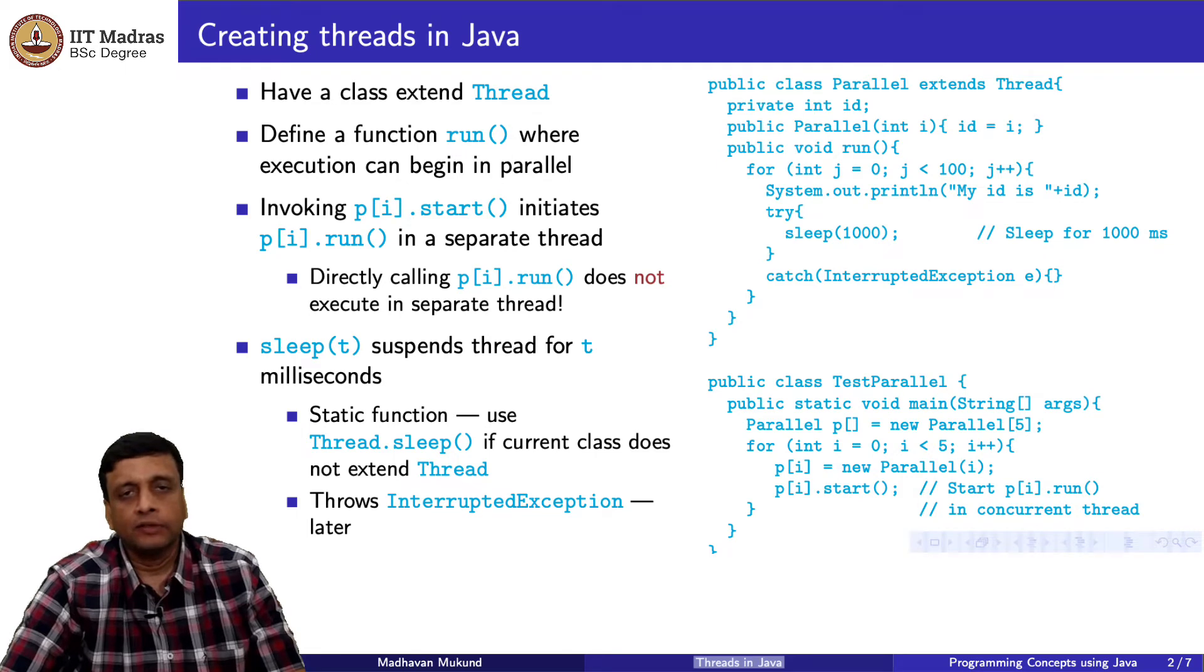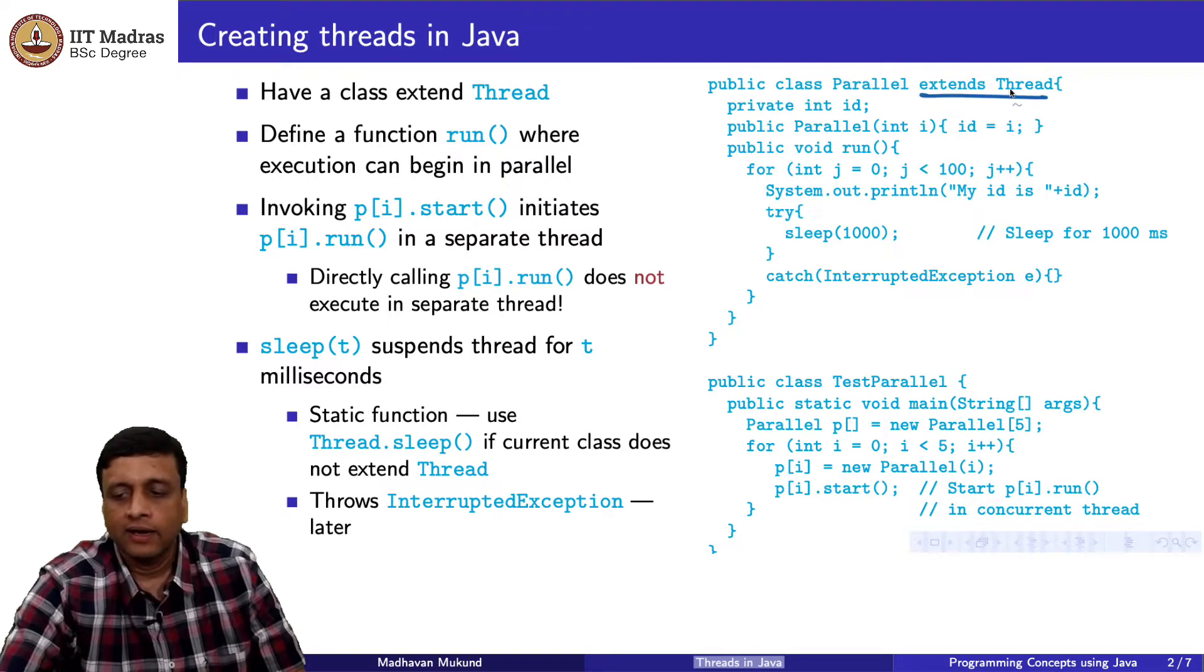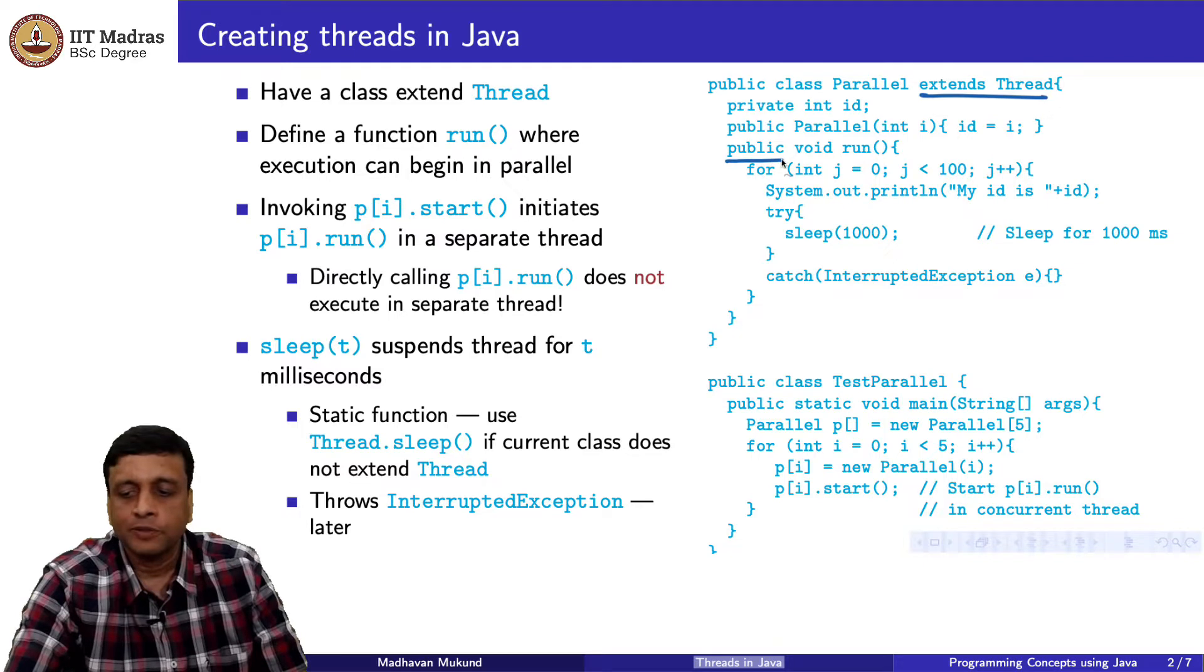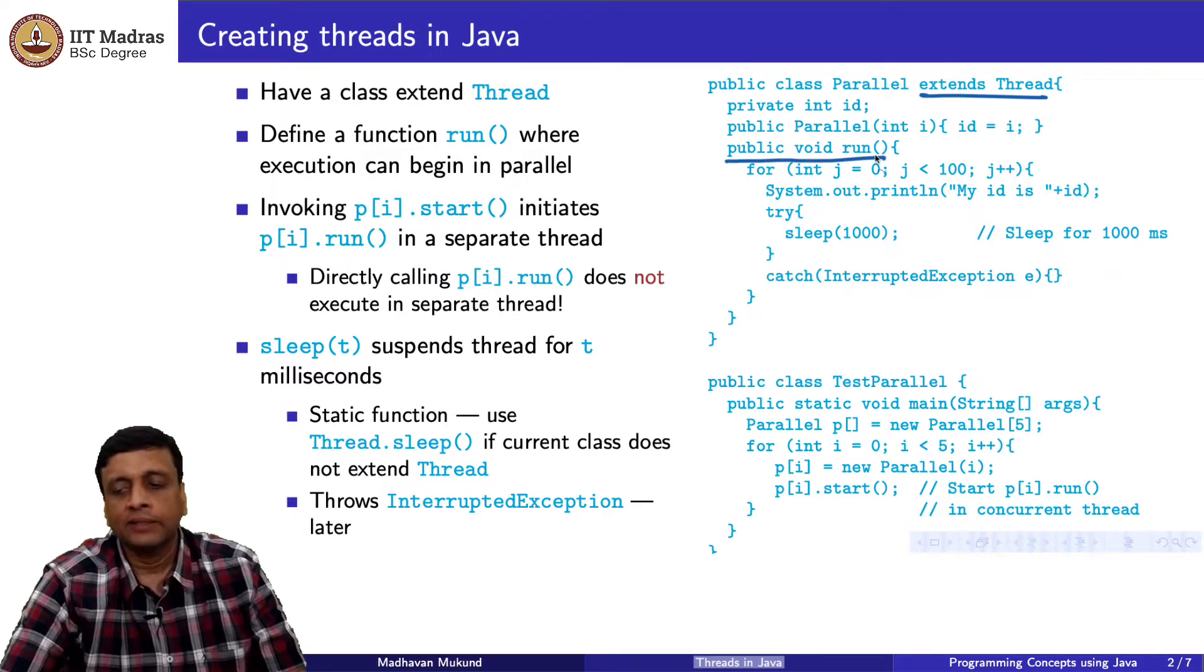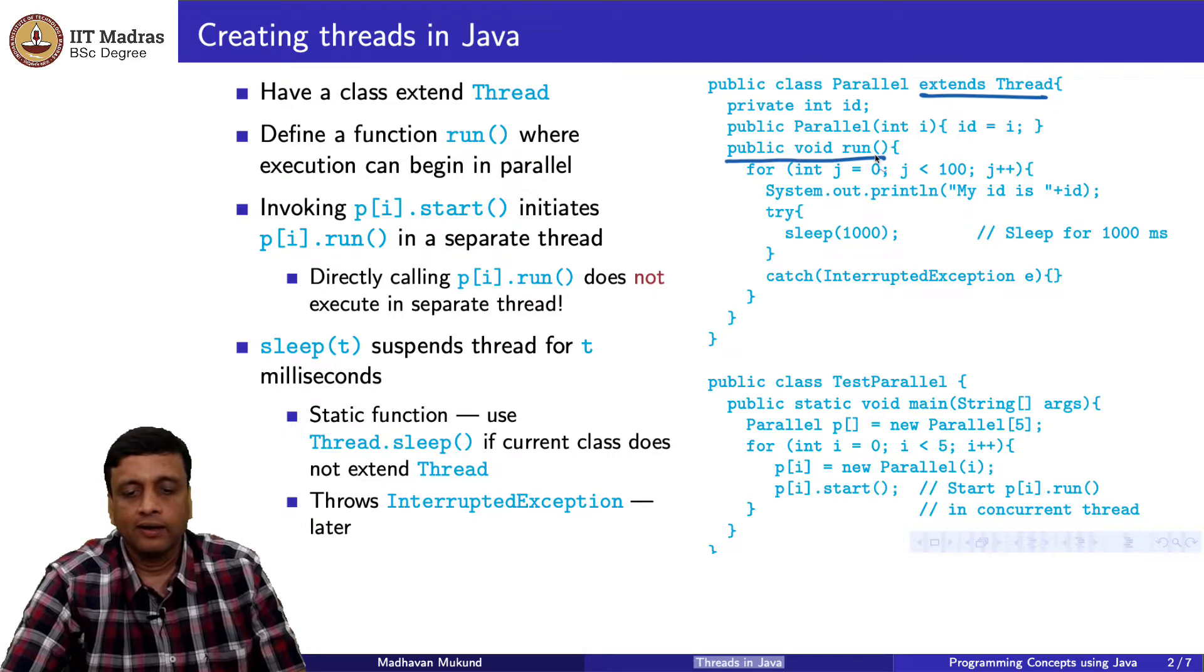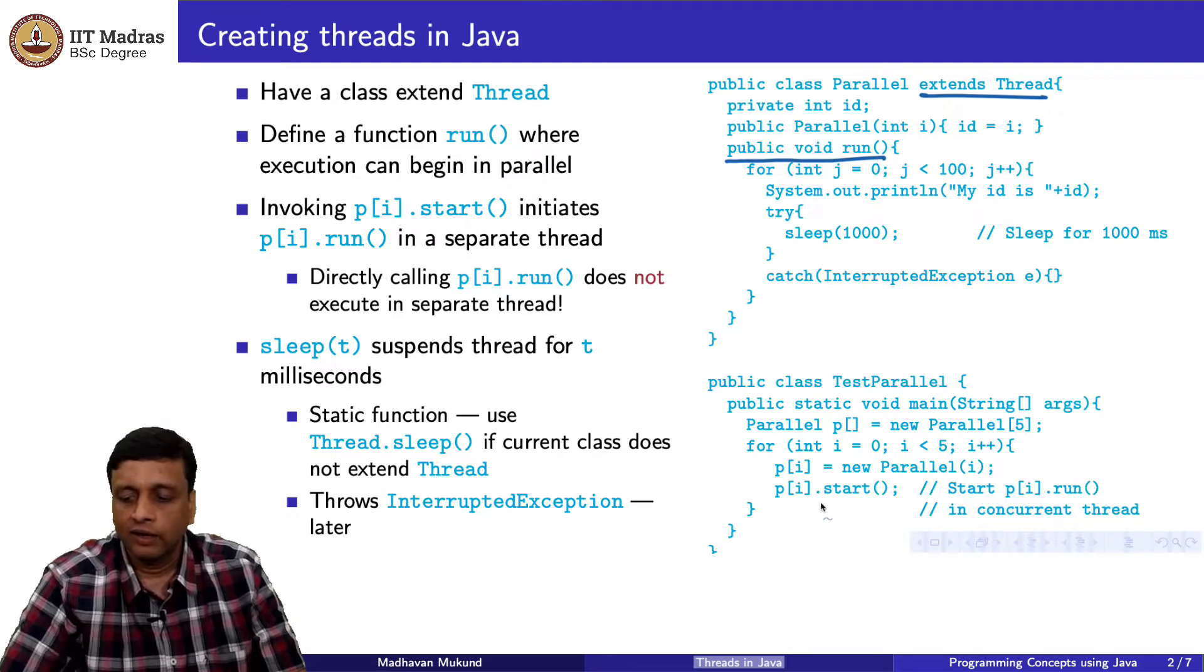Remember that in Java, we can create threads that can run in parallel by extending the class Thread. The way we do it is we extend the class Thread and inside this, we have a special function called run. When we have something that extends Thread and overrides this function run, then that function run can be actually executed in parallel. The tricky thing is that to execute this function run in parallel, what you do is you call that function through start.